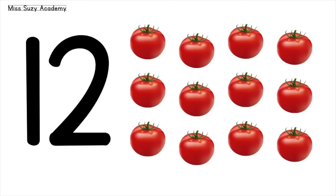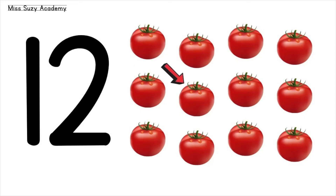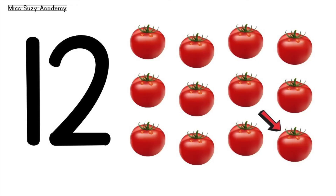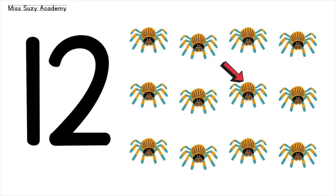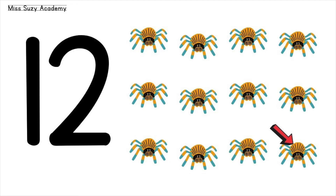12 Tomatoes. 1, 2, 3, 4, 5, 6, 7, 8, 9, 10, 11, 12. 12 Spiders.